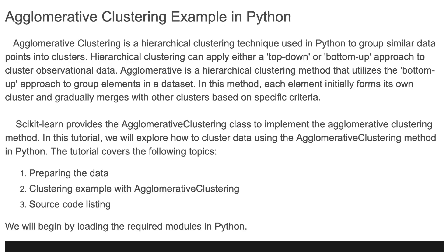Welcome back to my channel. In this tutorial I'm going to explain agglomerative clustering in Python. Agglomerative clustering is a hierarchical clustering technique used to group similar data points into clusters. Hierarchical clustering can apply either a top-down or bottom-up approach. Agglomerative is a hierarchical clustering method that utilizes the bottom-up approach, where each element initially forms its own cluster and gradually merges with others based on specific criteria.